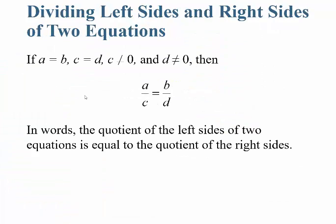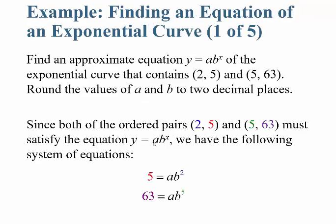Just remember: dividing the left side and right side of two equations. If a equals b and c equals d, then a divided by c must equal b divided by d. In words, the quotient of the left sides of two equations equals the quotient of the right sides. Let's do another one — find an approximate equation y equals A times B to the x of the exponential curve that contains the points (2, 5) and (5, 63), rounding the values of A and B to two decimal places.